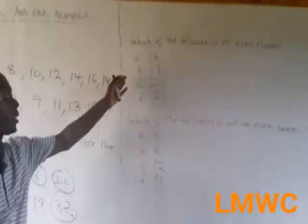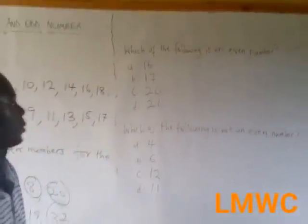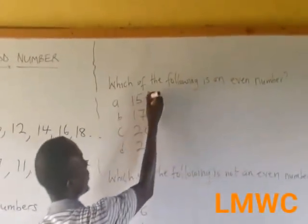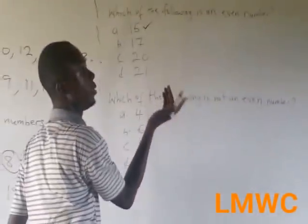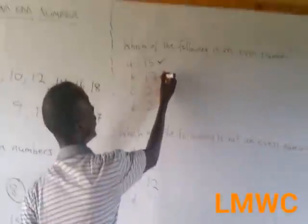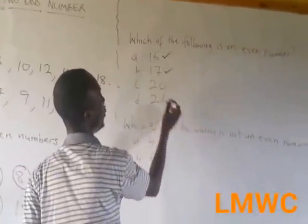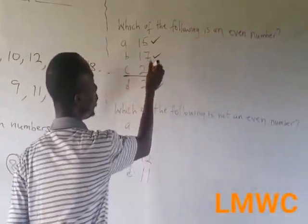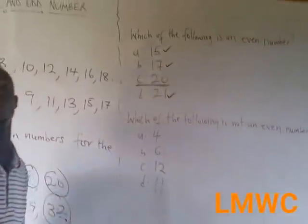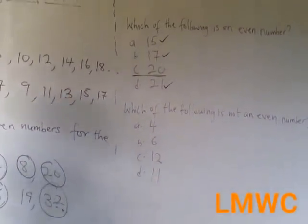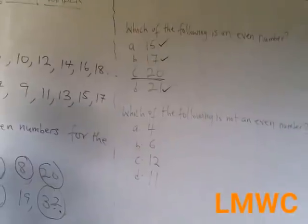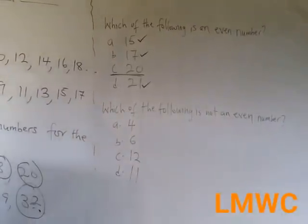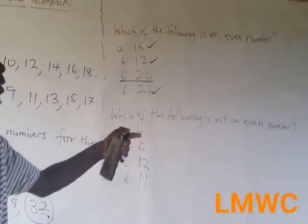In an objective, you can also be given a question like this. Which of the following is an even number? This is an odd number, because it's not divisible by 2. This is also an odd number. This is also an odd number. So it's C, because 20 is divisible by 2. I said, even numbers are numbers that are easily divided by 2, or that are divisible by 2.